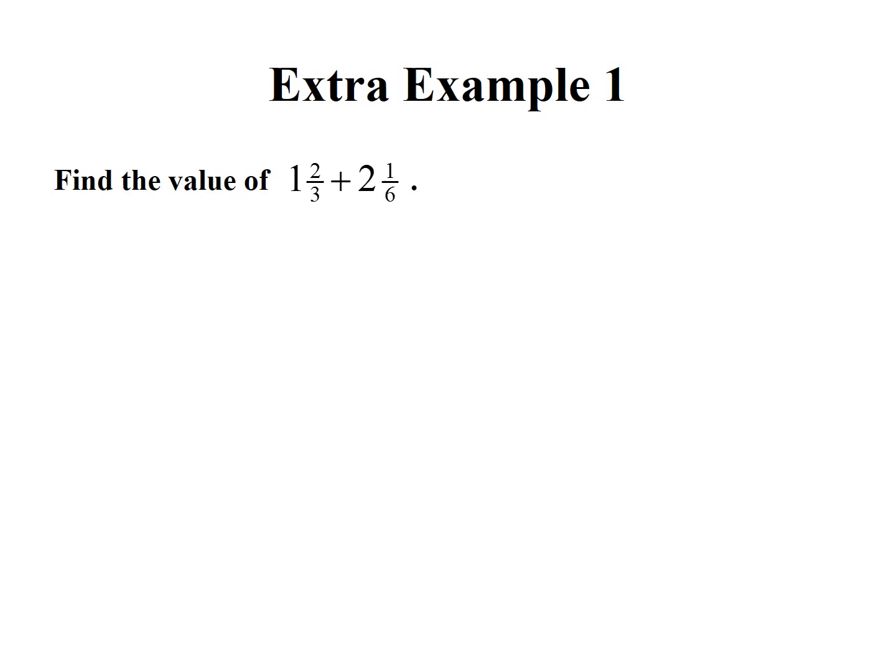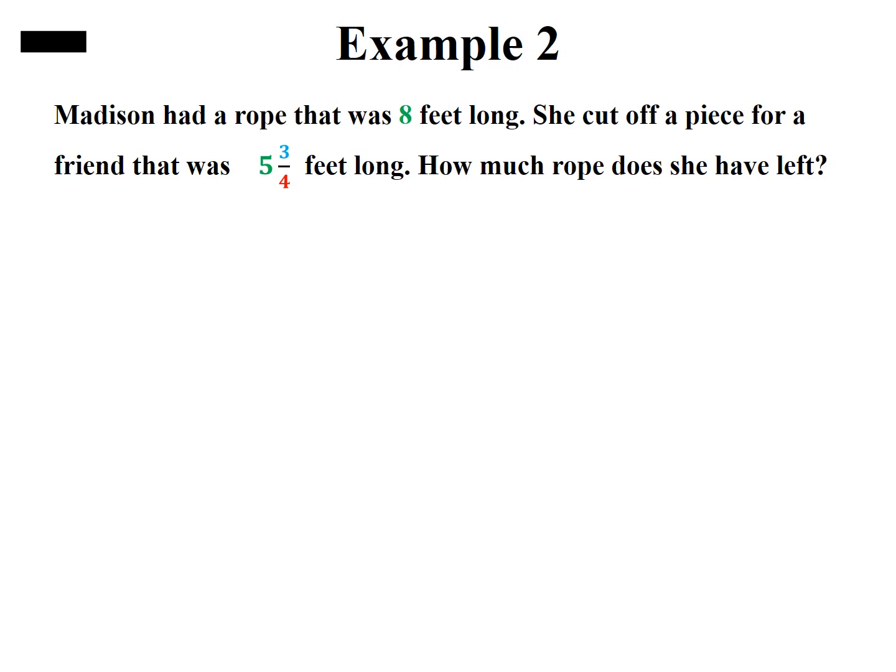Our subtraction problem is: Madison had a rope that was 8 feet long. She cut off a piece for a friend that was 5 and 3/4 feet long. How much rope does she have left? We're going to write the problem as 8 minus 5 and 3/4, and then we need to change them into improper fractions.